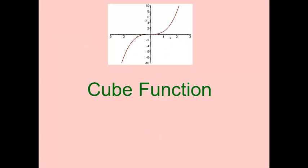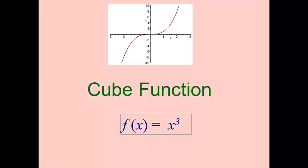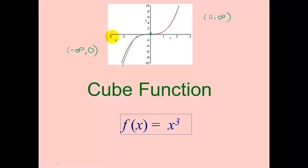Let's look at the cube function. All of these are graphs you should just know the shapes of — the common functions. The domain is all real numbers, the range is all real numbers. There is a zero at x = 0. This function is positive from zero to infinity, and negative from negative infinity to zero. As x approaches infinity the function value approaches infinity, and as x approaches negative infinity the function value approaches negative infinity.